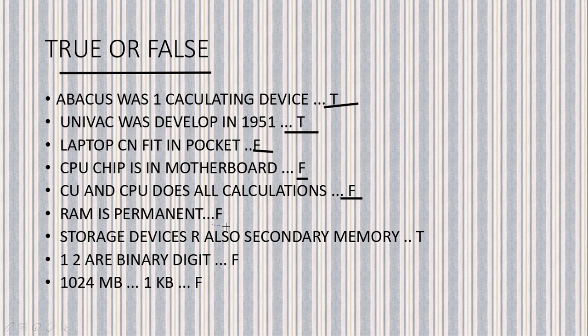Is RAM permanent? No, RAM is temporary memory. Are storage devices secondary memory? Yes. Are 1 and 2 binary digits? False — 0 and 1 are binary digits. Is 1024 MB equal to 1 KB? No — 1024 MB is equal to 1 GB.